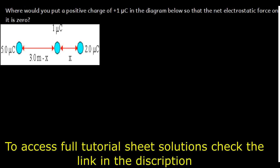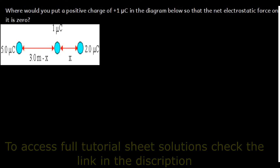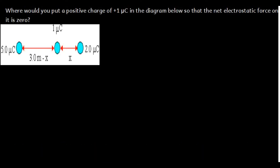We are still talking about the superposition principle. Here is our next question: where would you put a positive charge of +1 microcoulomb in the diagram below so that the net electrostatic force is zero? The net force being zero means that the force on the 1 coulomb charge due to the 2 microcoulomb charge equals the force due to the 5 microcoulomb charge.